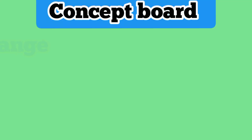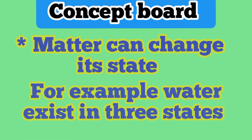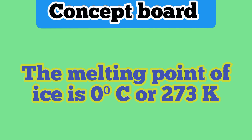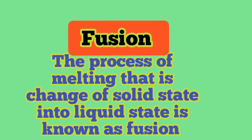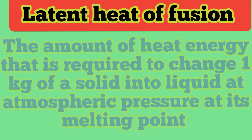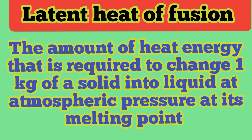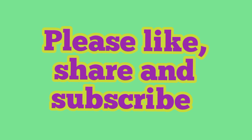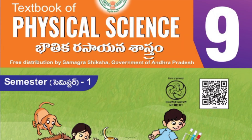See the concept board. Matter can change its state. For example, water exists in three states. Melting point is the temperature at which a solid turns into liquid at atmospheric pressure. The melting point of ice is 0 degrees centigrade or 273 Kelvin. The process of melting, that is, change of solid state into liquid state, is known as fusion. The latent heat of fusion is the amount of heat energy required to change one kg of a solid into liquid at atmospheric pressure at its melting point. I hope you liked it. Thank you so much for watching this video and choosing my channel. Goodbye.